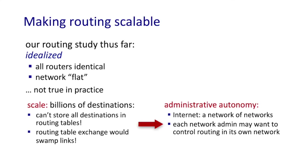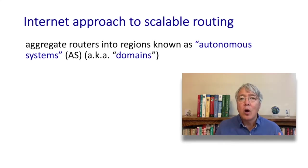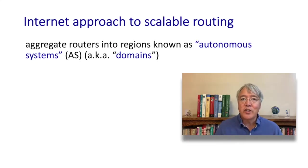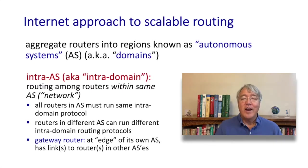The internet approach to scaling routing begins with aggregating routers into networks or regions called autonomous systems or domains. There are basically two types of routing: protocols for routing within a domain and protocols for routing among domains, with different protocols for each.